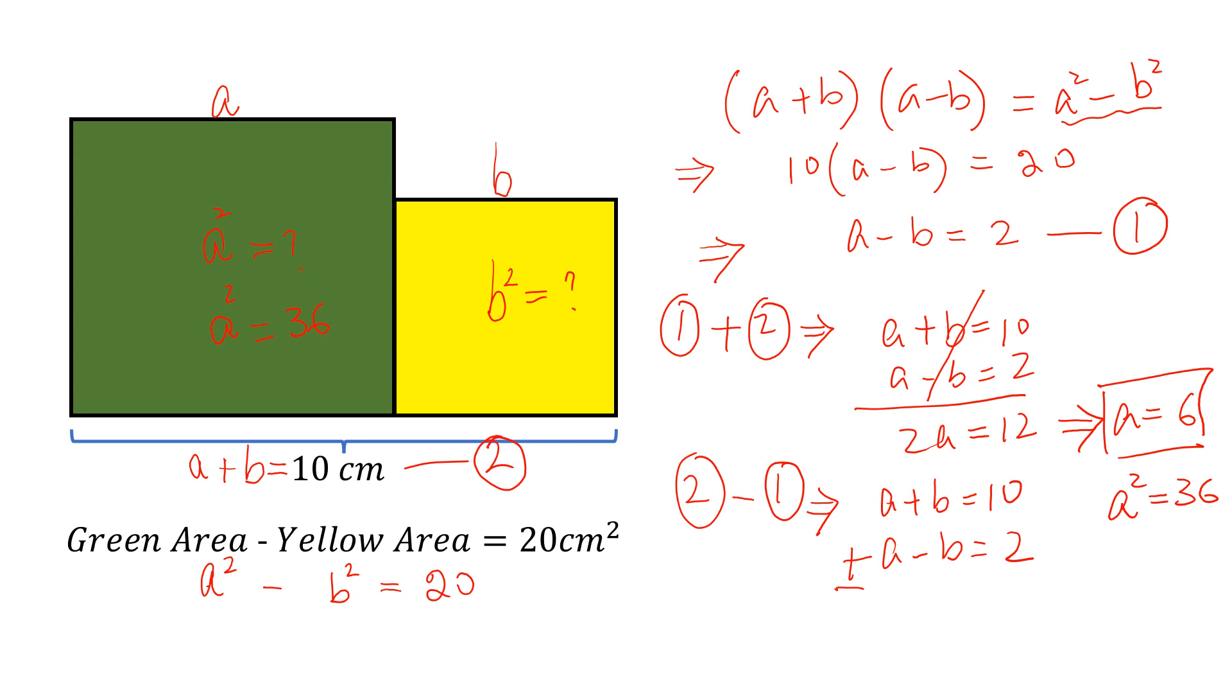This is plus, this becomes minus; this is minus, this becomes plus; and this is plus, this becomes minus. The A terms cancel and 2B equals 8, so B equals 4. If B equals 4, then B² equals 16, and this is the required answer.